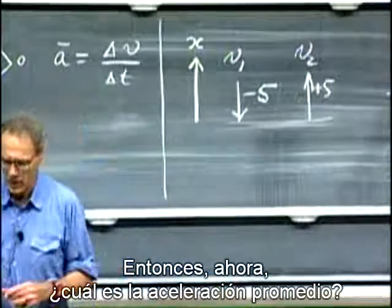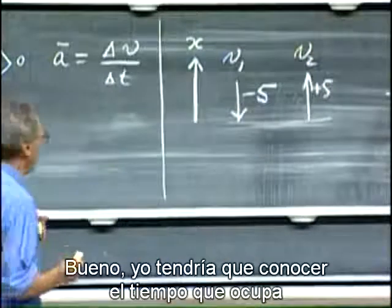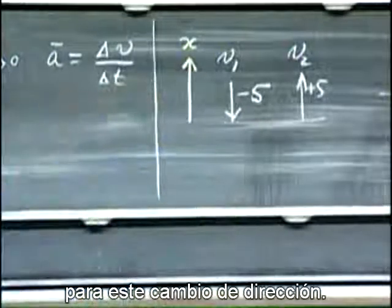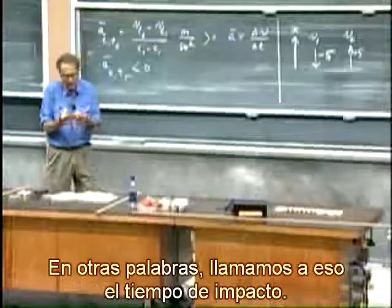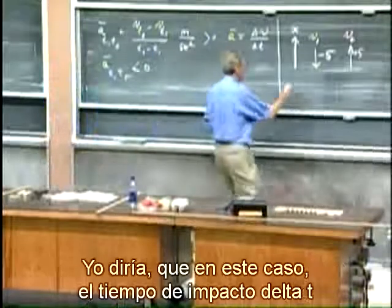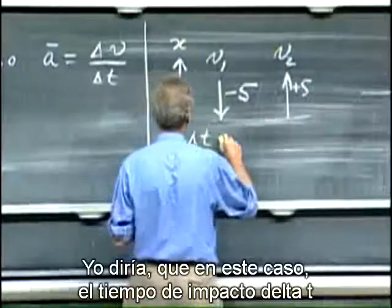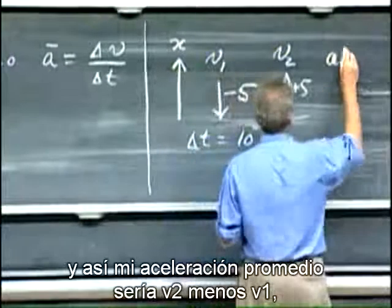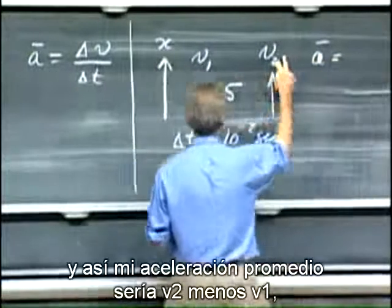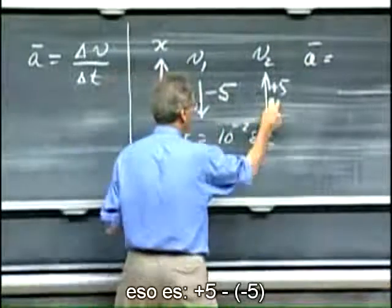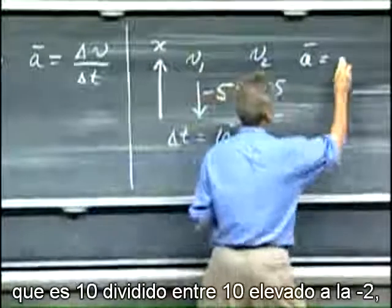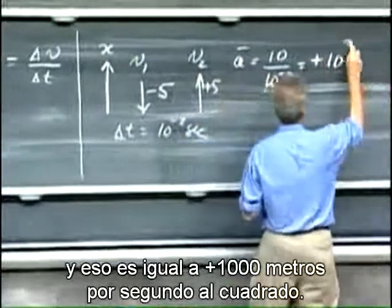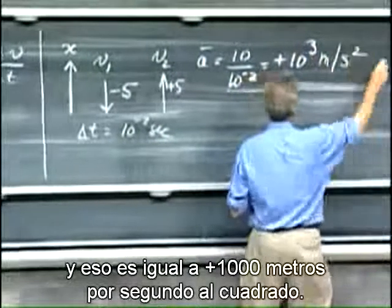I call the downward velocity v1 and the upward velocity v2. So what is the average acceleration? I need to know the time it takes for this change in direction — the impact time. In this case, the impact time delta t is probably about a hundredth of a second. So my average acceleration would be v2 minus v1, that is plus five minus minus five, which is ten, divided by ten to the minus two — and that is plus 1,000 meters per second squared.